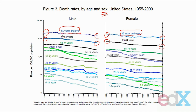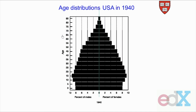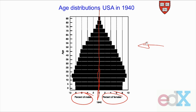The rates are going down, but just as the population was getting older when rates were going down for everybody, now we see that since rates are going down differently and are lower for females, females should be getting older more so than males. This is called an age pyramid — two histograms lying side by side. In 1940, the center line separates males on the left from females on the right.